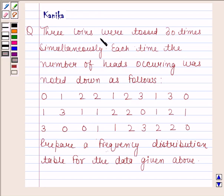The question says three coins were tossed 30 times simultaneously. Each time the number of heads occurring was noted down as follows. This is the data given to us. Prepare a frequency distribution table for the data given above.